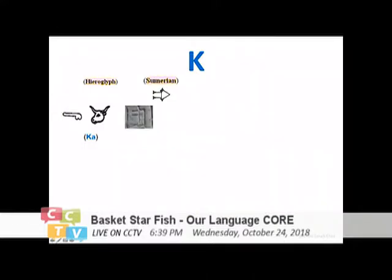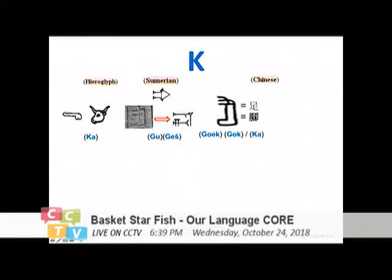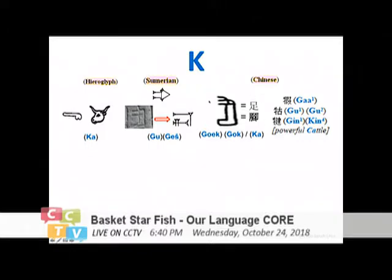Then the 'kar' in hieroglyph. This is Sumerian — this is the Gu sound. This is a writing in Babylonian Sumerian, become cuneiform right there. It has the Gu or Ge sound. And this is Chinese — as I said, they are identical. We have the sound of Gu, Gu, or Ka itself, representing the food in this sound. We also use the same sound, just visually differentiated, to mean the powerful cattle itself. It's Ga, Gu, Gu, Kin, Kin.